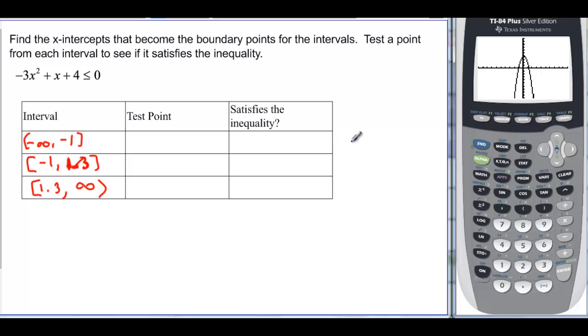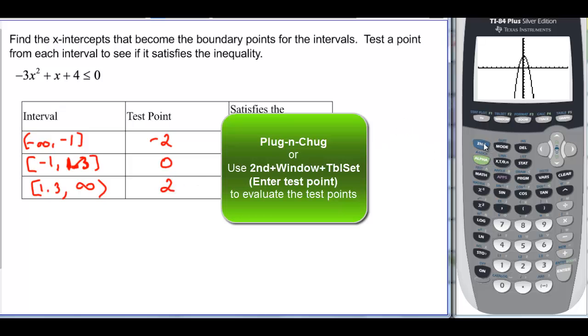So if I want to test, I could use a table if I don't want to use the graph. So I test a point somewhere between negative infinity and -1. Let's try -2. And then I can pick a point between -1 and 1.3. So let's try 0, that's always nice. And positive 1.3 to infinity, let's try positive 2. Well, we can plug and chug if we want to, or we could go to our table. And I'm going to actually let it start at like -3, because I want you to see what happens.